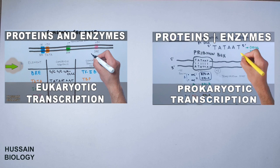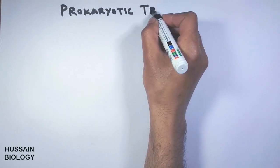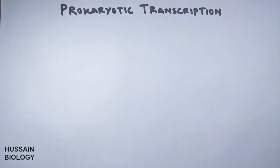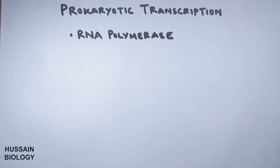In this series of videos we have been discussing about the proteins and enzymes in prokaryotic and eukaryotic transcription. Now in this video we will be discussing about the mechanism of prokaryotic transcription. The prokaryotic transcription proceeds in three steps: initiation, elongation, and termination. This process is driven by DNA-dependent RNA polymerase enzyme which transcribes the DNA.